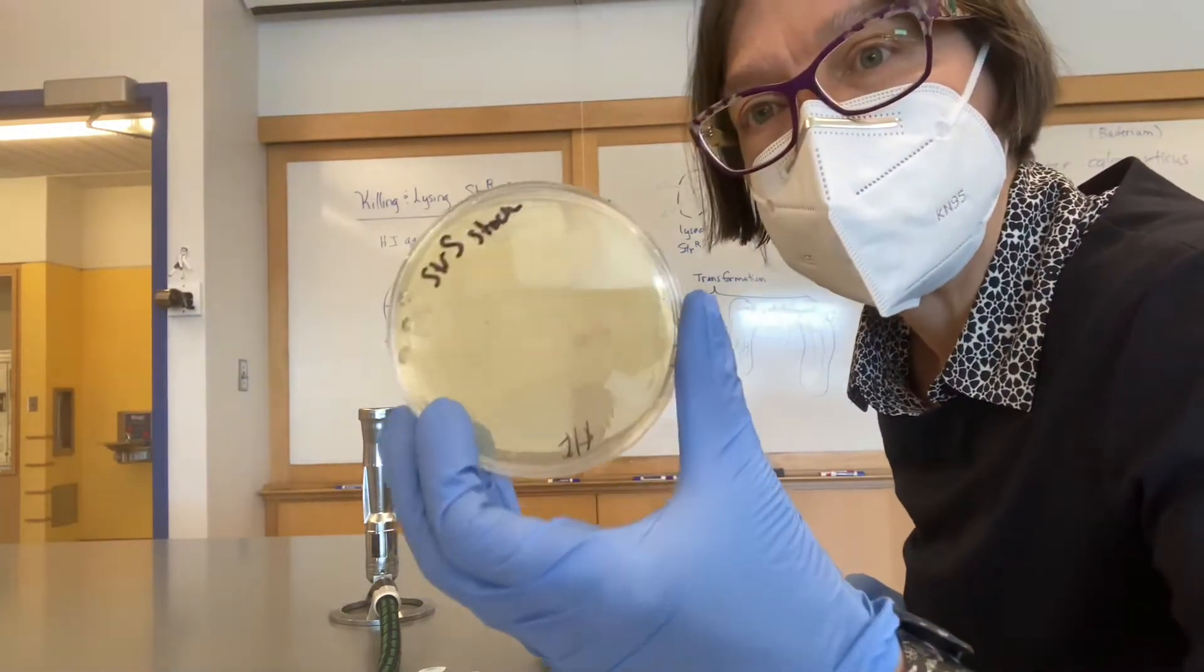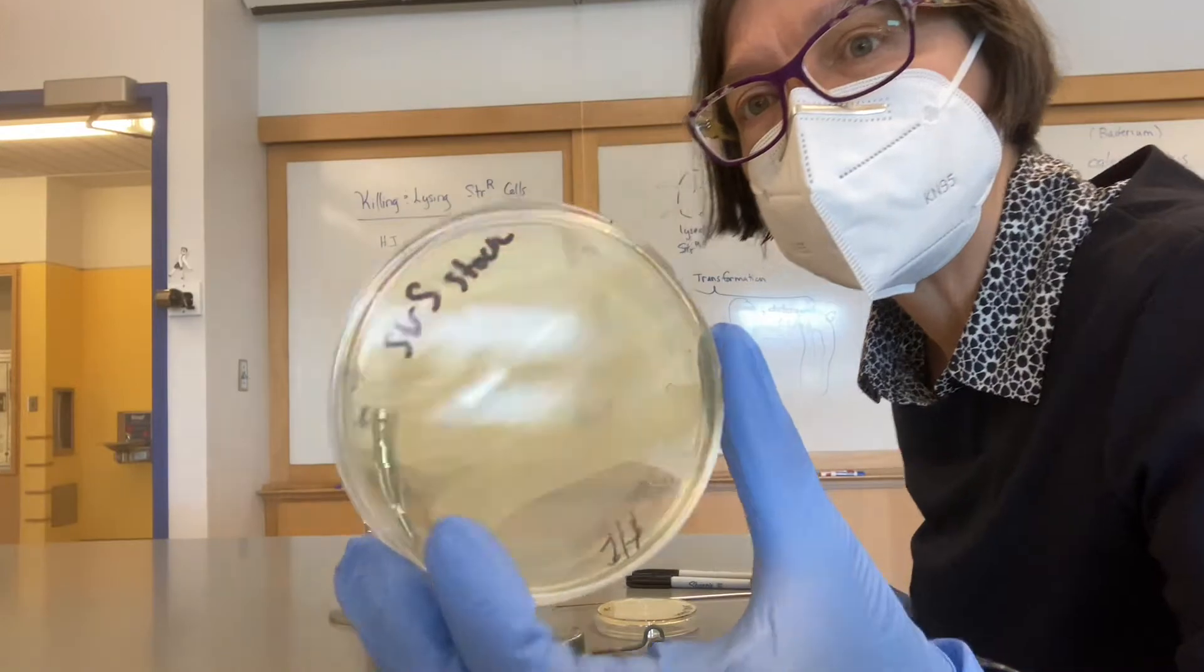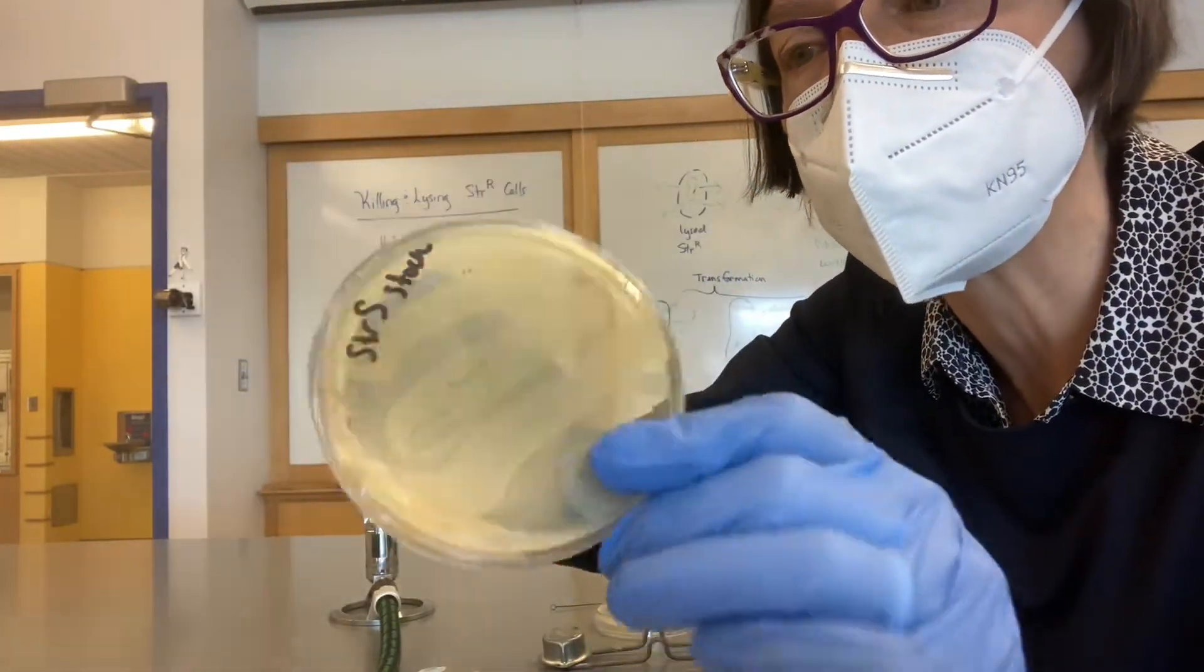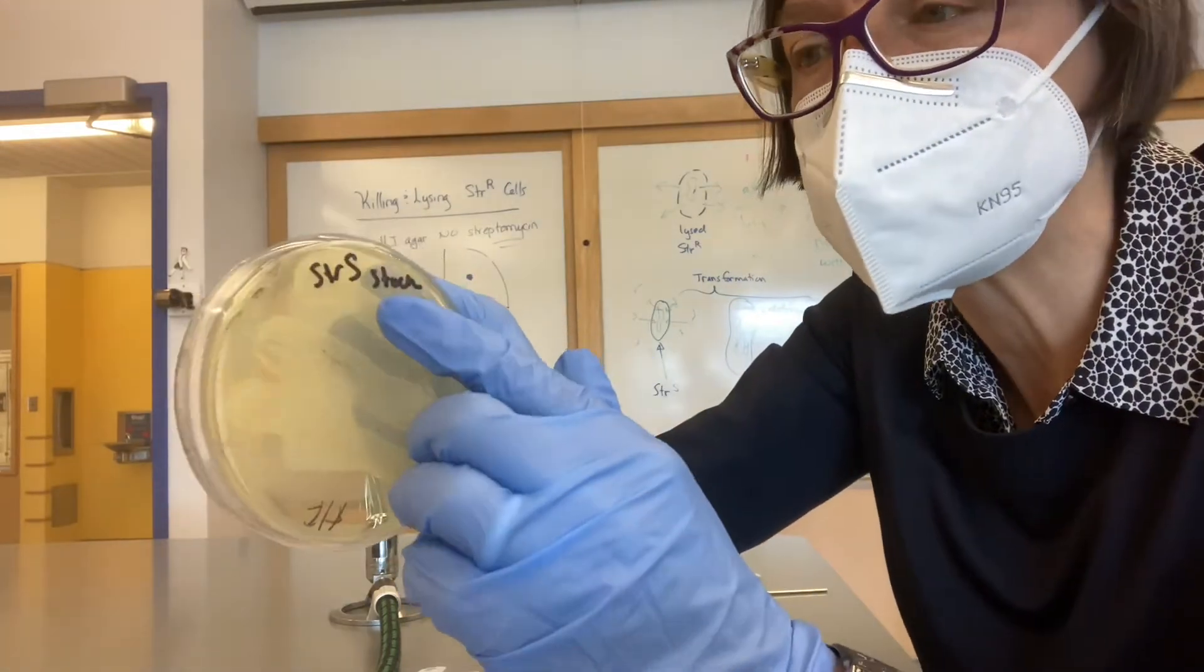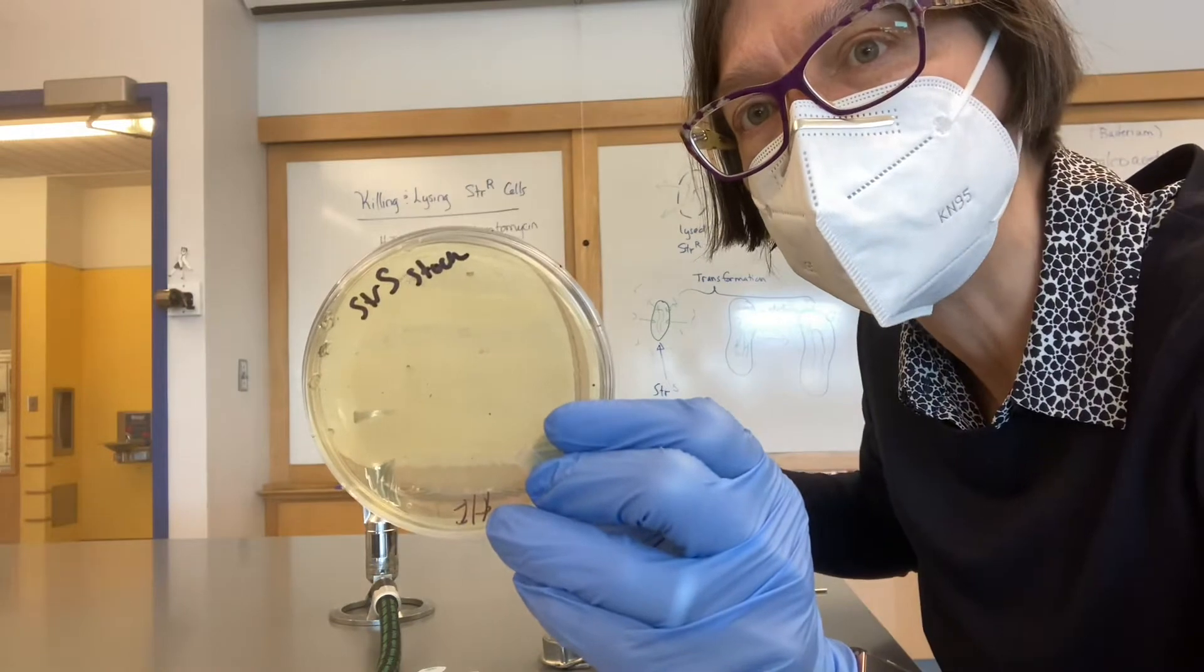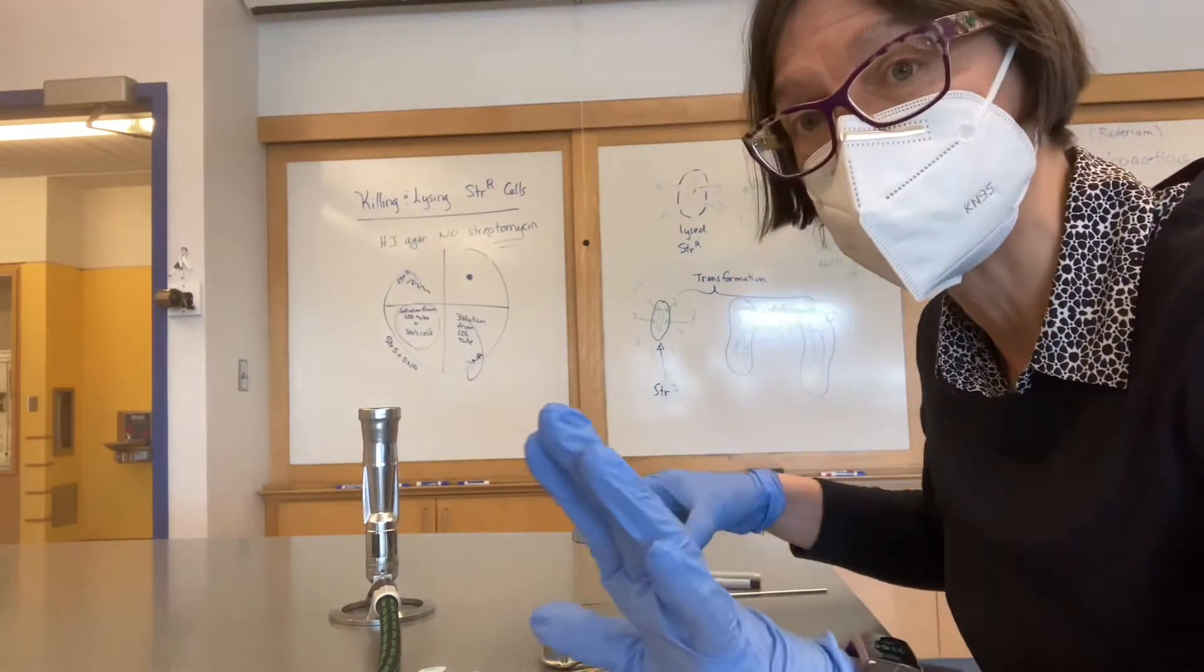We have a plate that has growing cells. You can see them kind of like the film there, of Acinetobacter calcoaceticus labeled STRS. That's the susceptible AAD2 gene lacking strain.